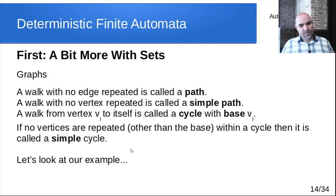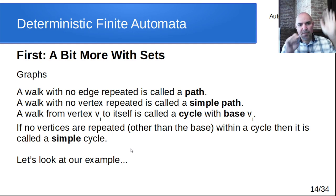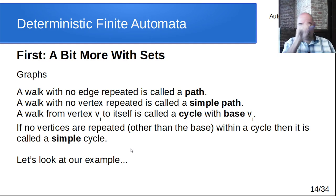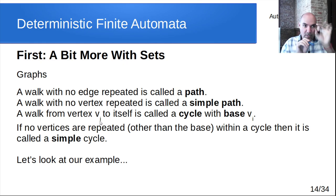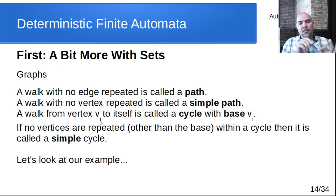A walk with no edge repeated is called a path — like crossing a bridge and burning it down, never crossing the same one twice. A walk where no vertex is visited more than once is called a simple path. A walk that starts and ends at the same vertex is called a cycle, and that vertex is called the base of the cycle. If no vertices are repeated other than the starting and ending vertex, it's called a simple cycle.